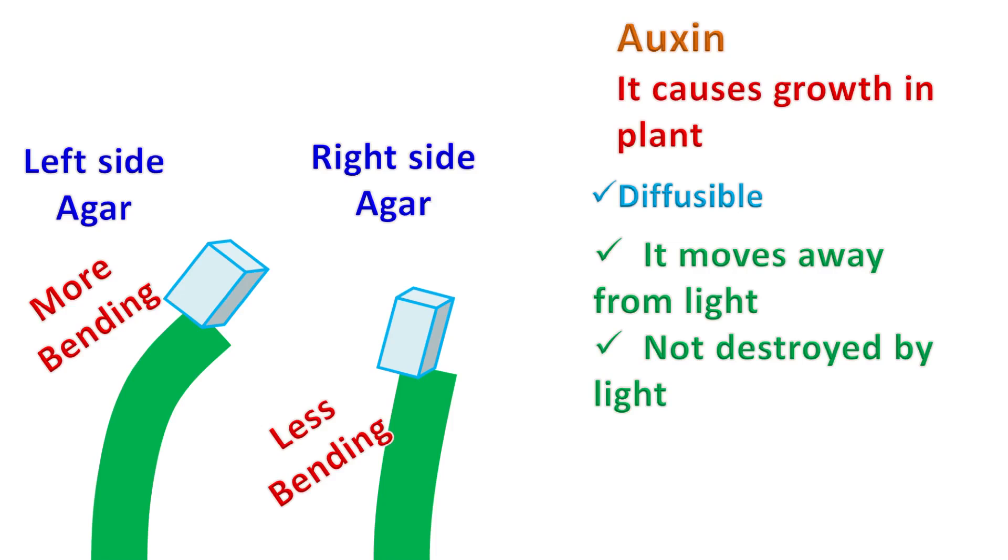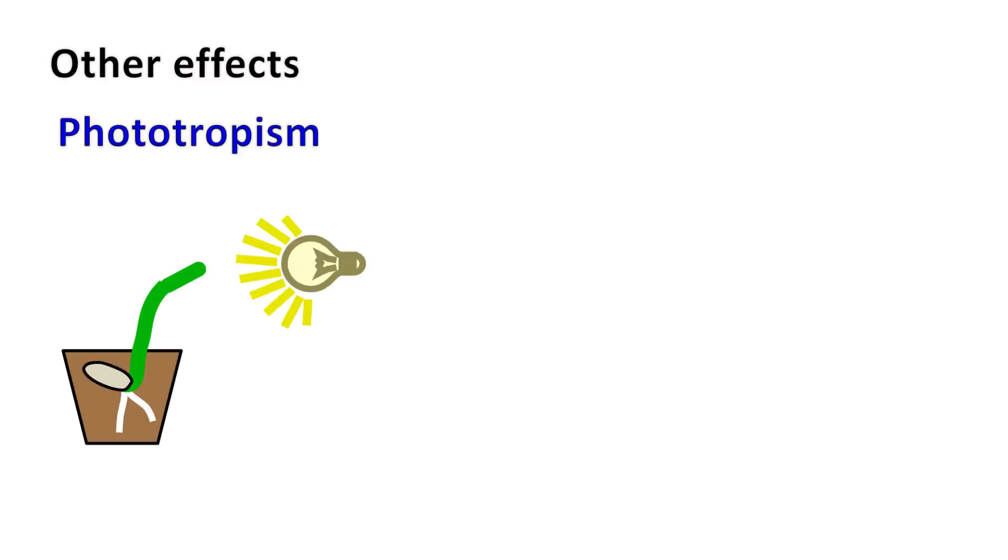Now let's talk about the function of auxins in plants. Auxins play an important role in phototropism and geotropism.